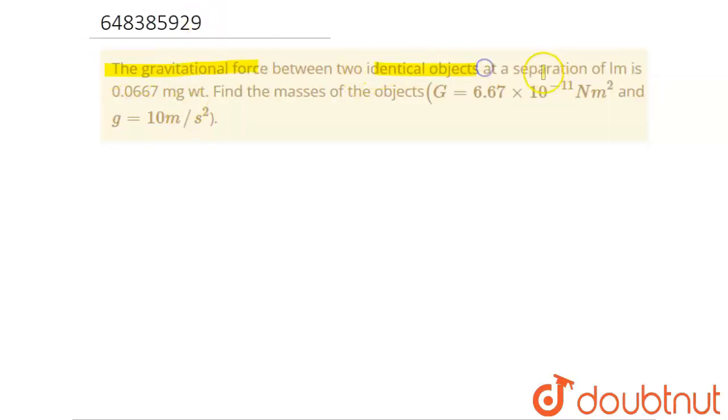force between two identical objects at a separation of one meter is 0.0667 mg weight. Find the masses of the objects. We have been given the value of capital G, the universal gravitation constant, and small g, the acceleration due to gravity.